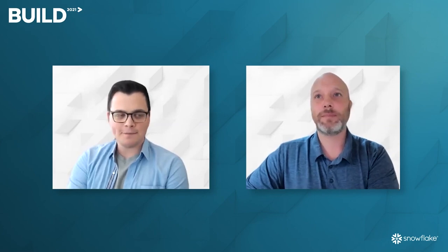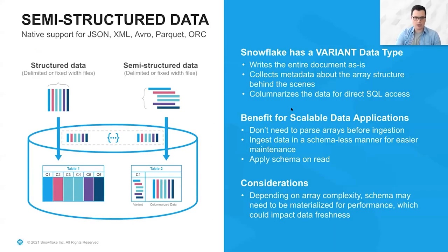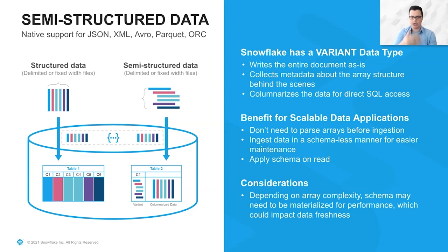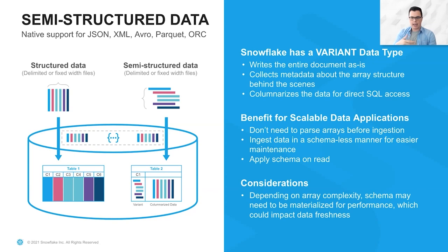Now let's go over some of the features that enable these capabilities. Snowflake has native support for both structured data, but also semi-structured data like JSON, XML, Avro, and others. This means that you can actually store JSON data in a hybrid table alongside your structured data. It also means you can use SQL to query and analyze your JSON documents in the same way, and you can do it in a hybrid manner in the same table.